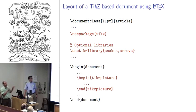First off, kind of the bare bones document, really nothing terribly surprising here. Use package TikZ, you can include some optional libraries if you want that come with the installation of TikZ. Then inside of your document whenever you want to include a graphic, you just do a begin TikZ picture environment, and then inside of there you'll put all of your TikZ macros.